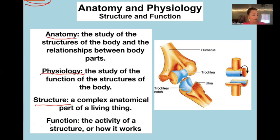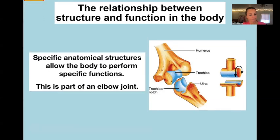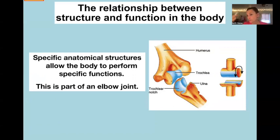Function is how something works. Structure and function are very tightly associated with each other. During evolution over a billion years, the structures of the body developed when the way they functioned was a good answer to the problems in the environment. So structure and function evolved together over time, and specific anatomical structures allow the body to perform specific functions.